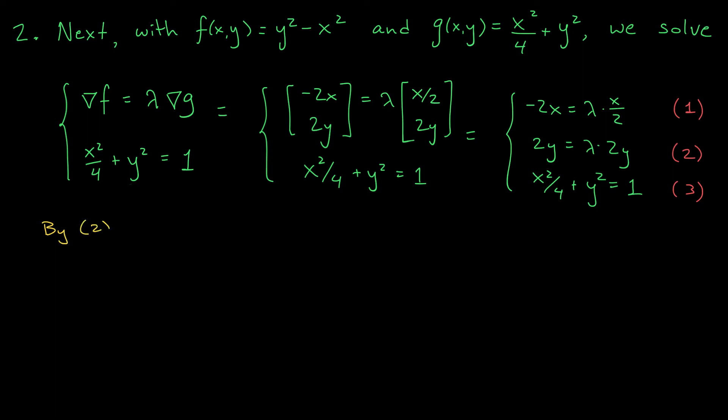Looking at equation 2, we have 2y equals 2 lambda y. Now at this point, it's probably tempting to just cancel the y's, but don't do it. We don't know that y is non-zero, and so you might be losing solutions to your system if you cancel variables blindly. Instead of dividing, I always recommend factoring. So by moving everything to the left, we can factor a 2y. We get 2y times 1 minus lambda equals 0. And now you can see we have two possibilities, either y is 0 or lambda is 1. We have to consider each possibility separately.